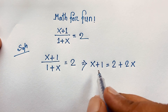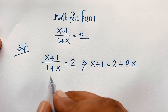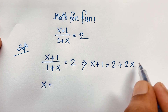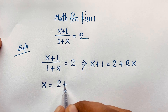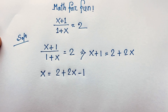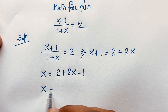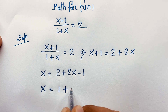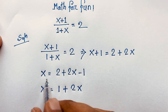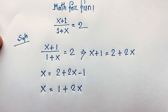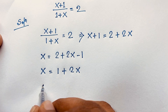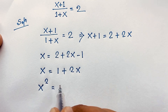Now I take this x here, and if I move this term to this side, we get 2 plus 2x and this is negative 1. So x is equal to 2 minus 1, which is 1, and here is 2x. Then if I move 2x to this side, we find x is equal to negative 1. But we'll find two solutions here, so at this moment I use both sides squared.